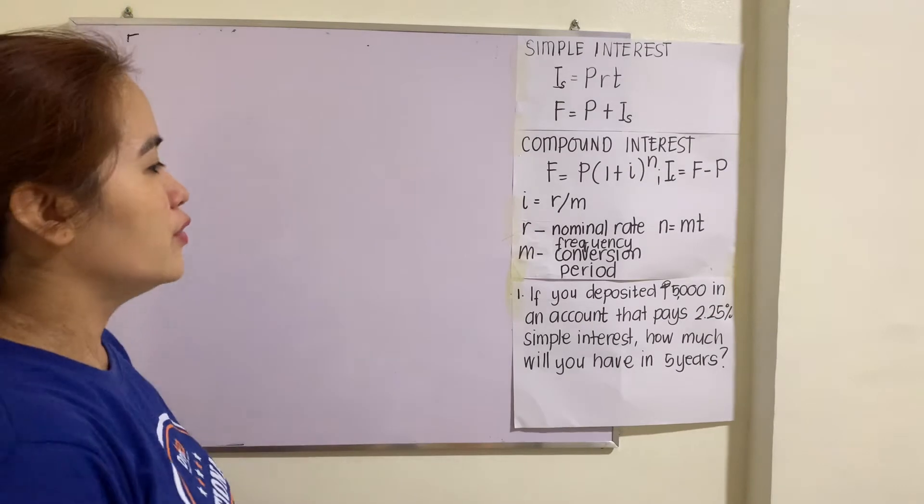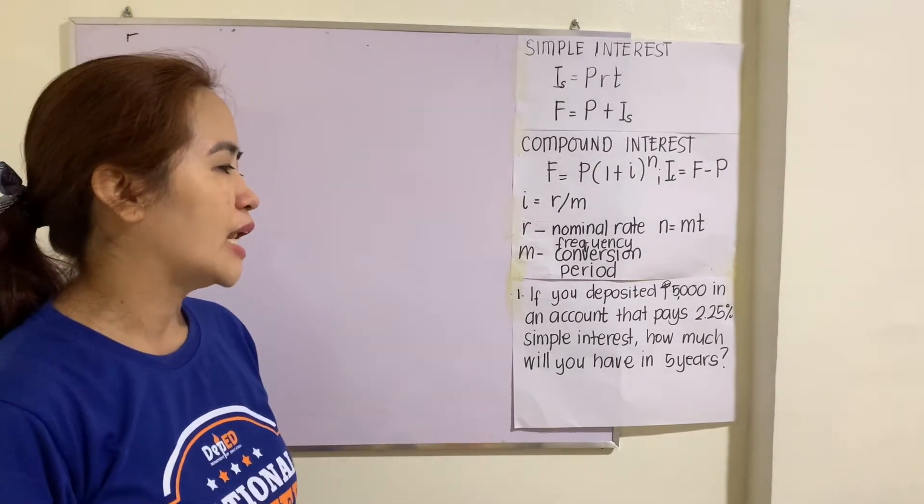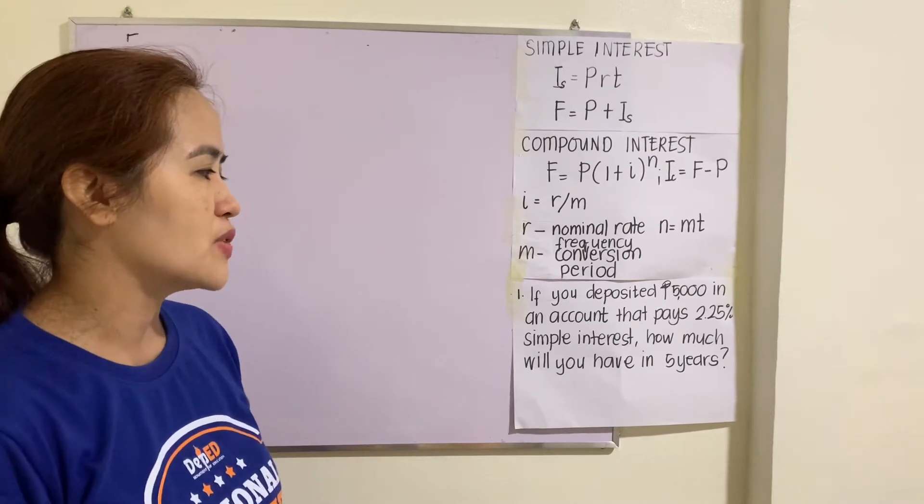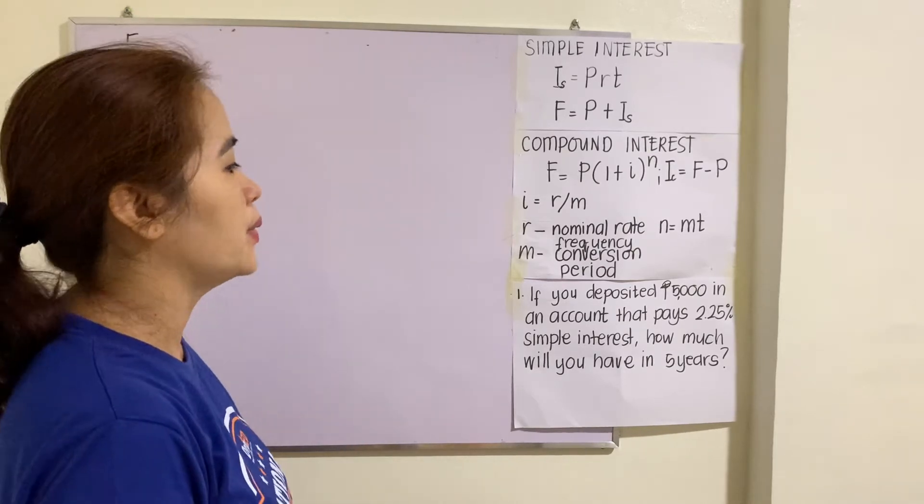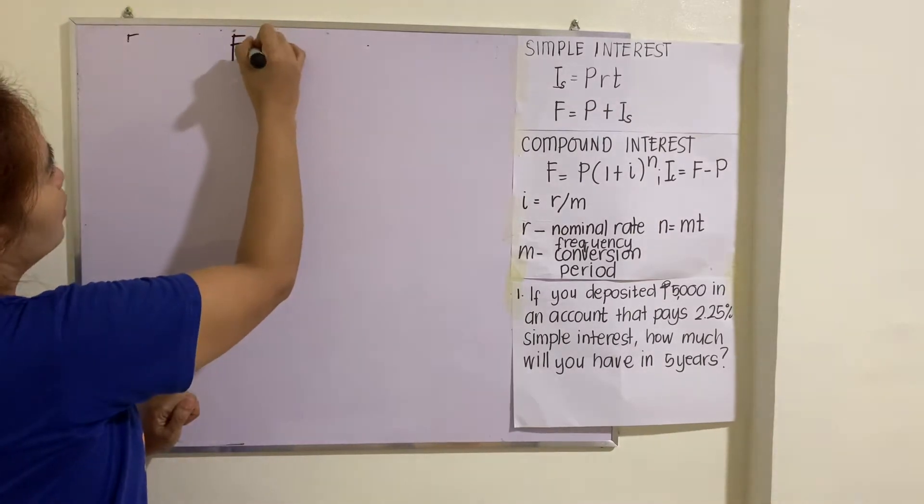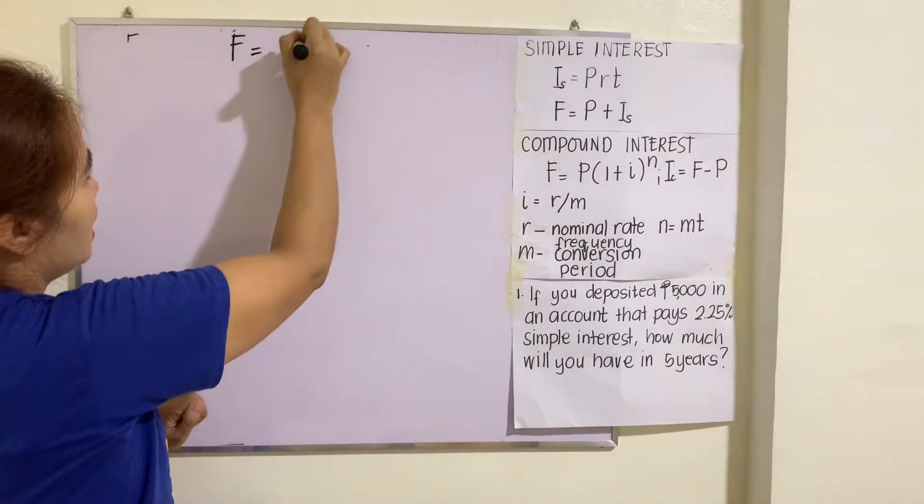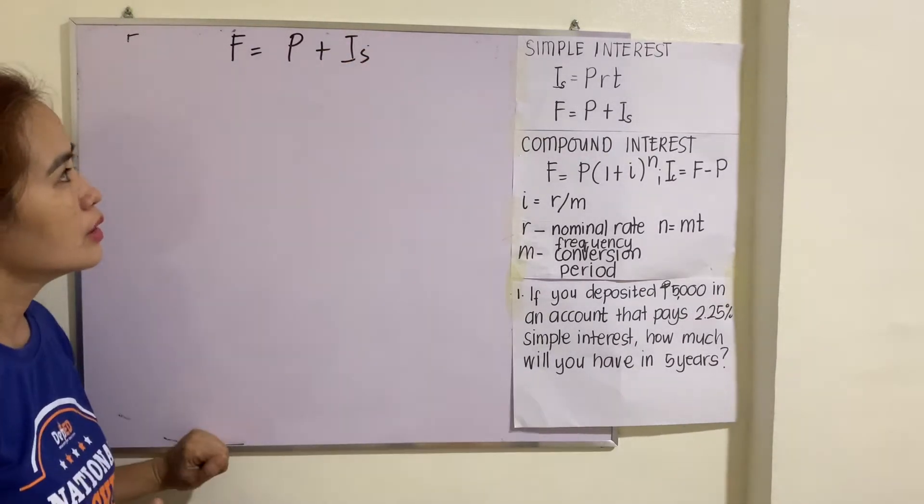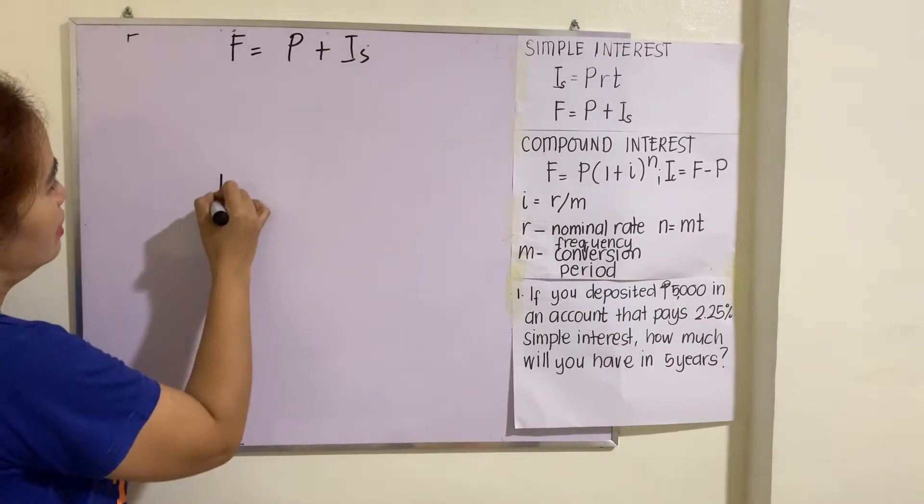Example 1: if you deposited $5,000 in an account that pays 2.25% simple interest, how much will you have in 5 years? So we are looking for the future value and the formula is F = P + I_s. But of course, we do not have I yet.